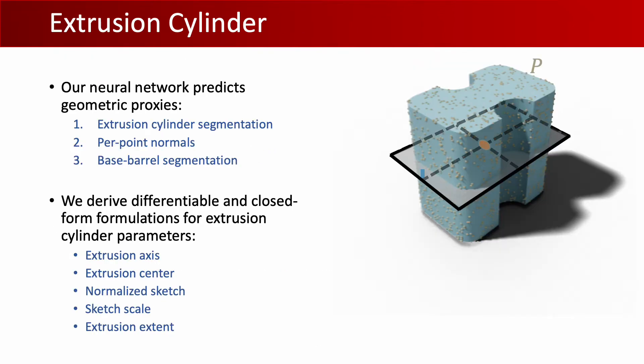We now formally define the extrusion cylinder. Our neural network is trained to predict geometric proxies: the extrusion cylinder segmentation, per-point normals, and base-barrel segmentation. Using these predictions, we then derive differentiable and closed form formulations for the extrusion cylinder parameters, namely extrusion axis, extrusion center, normalized sketch and scale, and extrusion extent.